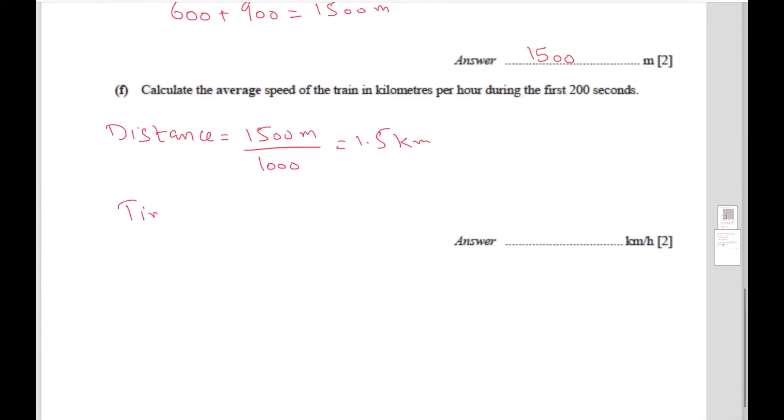And the time that it took was 200 seconds. You divide this by 60 times 60 to convert this into hours. When we do this, we get 200 divided by 60 times 60, this gives us 1 over 18 hours. That's an unusual number but let's use it.